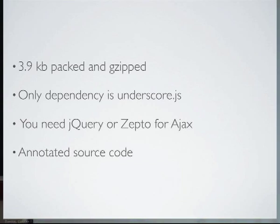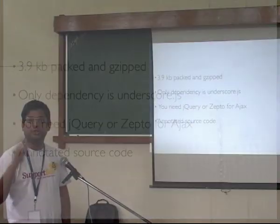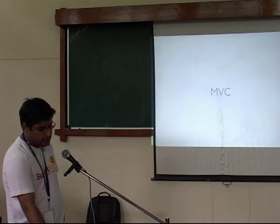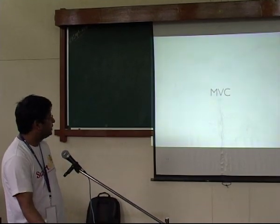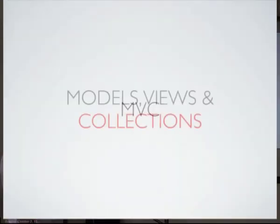Backbone has very well-annotated source code — it's just 700-750 lines of code. You can go through the entire source code and there's no magic happening. It gives us MVC — Model, Views, and Collections. It's not Model, Views, and Controllers — it's Model, Views, and Collections.